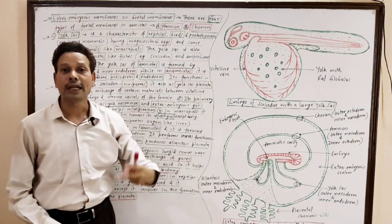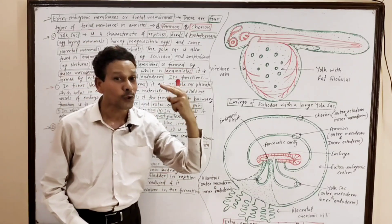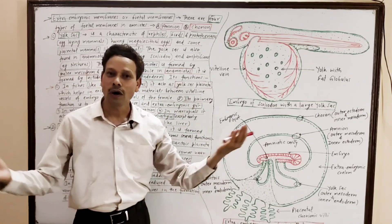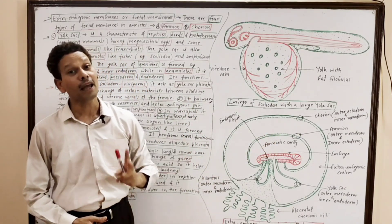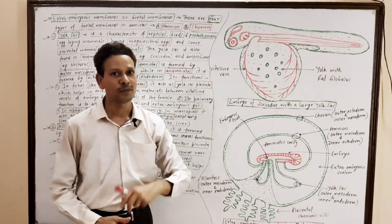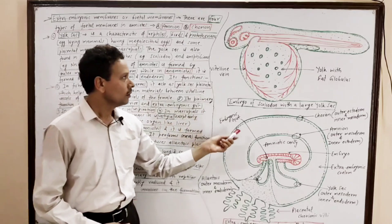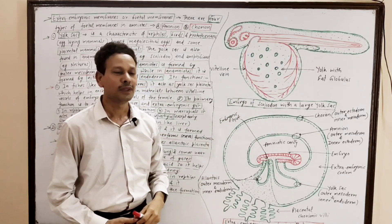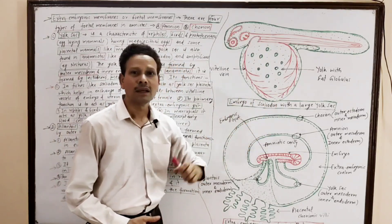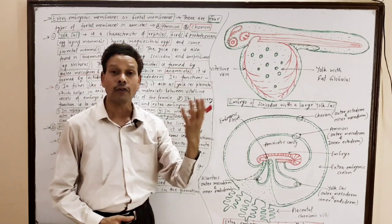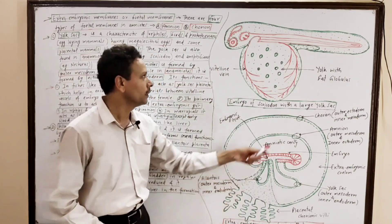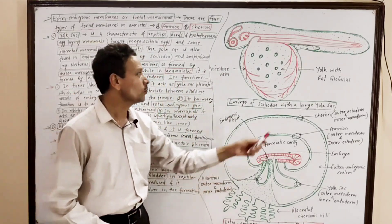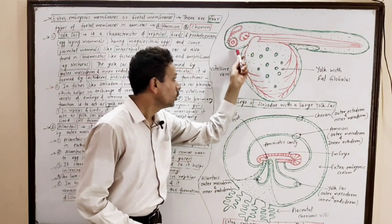The third extra embryonic coat is the yolk sac. Note that the yolk sac is a characteristic feature of all amniotes and anamniotes. Here, looking at this embryo of Scyliorhinus — the cartilaginous fish, the dogfish — this yolk sac acts as a reservoir of yolk.